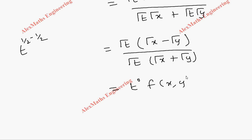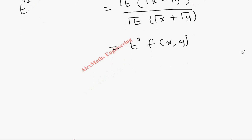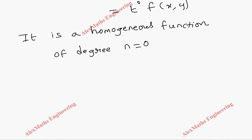So from this it is clear that it is a homogeneous equation of degree 0, so the homogeneous function of degree n equal to 0. By Euler's theorem we have x into del f by del x plus y into del f by del y equal to n f.